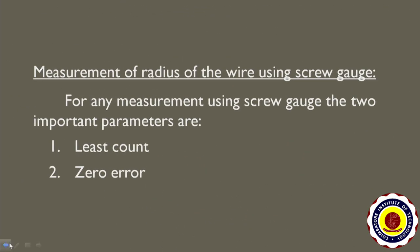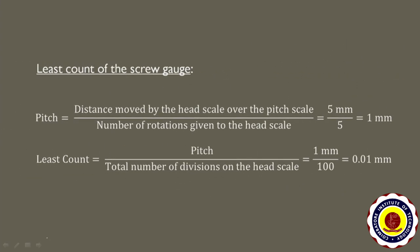For measurement of the radius of the wire using the screw gauge, the two important parameters are least count and zero error. The least count of the screw gauge is found by first calculating the pitch. Pitch equals distance moved by the head scale over the pitch scale divided by number of rotations. If you rotate 5 times, the distance moved is 5 mm, so pitch equals 1 mm. The least count is equal to 0.01 mm.